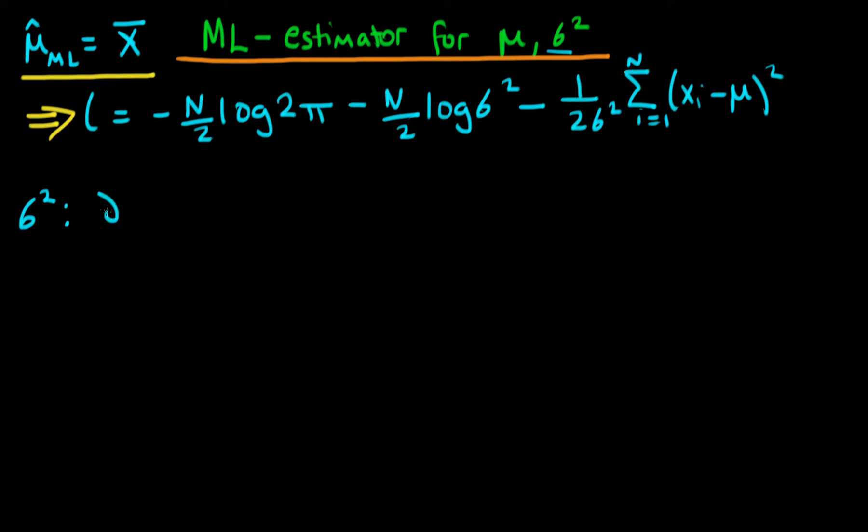Just the same way that when we were looking for the mean, we differentiated with respect to mu, when we're looking to derive the population variance, we're going to differentiate with respect to sigma squared.